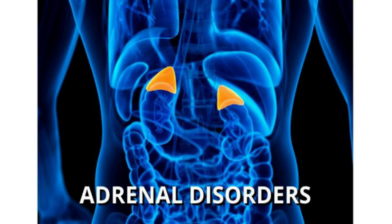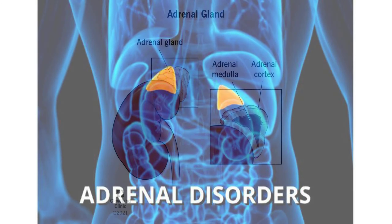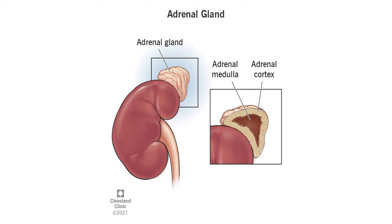There are many conditions that can lead to problems with the adrenal gland function. The adrenal glands are small and shaped like triangles and are located just above each kidney. They are sometimes called suprarenal glands. Their job is to make hormones that you need to keep your metabolism, blood pressure, immune system, and stress response in balance.